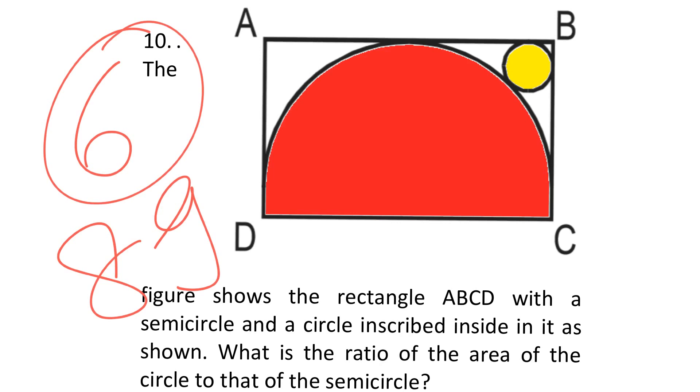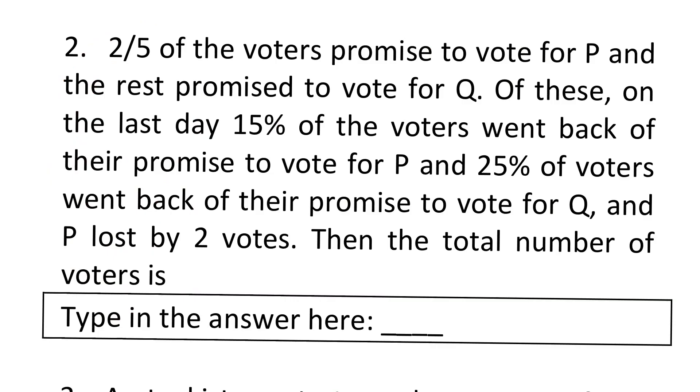At number five is calculator. Now the calculator is allowed in the exam, which is a good sign for students, but trust me you're not going to use the calculator at all. You don't need to use the calculator. For example, if I look at the questions here - 2 by 5, 40 percent, 15 percent, 25 percent, 2 votes - the values are very commonly given values, very easy to calculate.